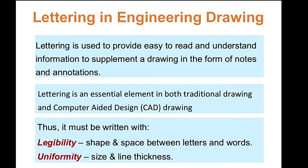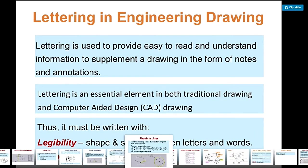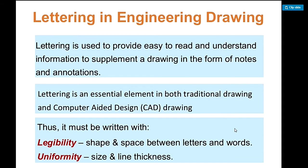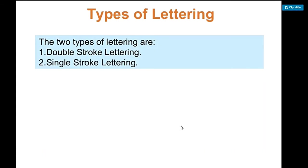Let's move now to lettering in engineering drawing. Why is good legibility and uniformity of your lettering important? Lettering is used to provide easy to read and understand information to supplement drawing in the form of notes and annotations. Lettering is an essential element in both traditional drawing and computer-aided design. Thus, it must be written in a very clear manner. It must have legibility and uniformity, meaning uniform and very clear. When you do lettering, the size of letters should be the same, except for caps and small letters.